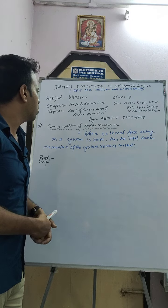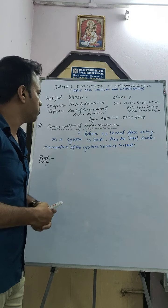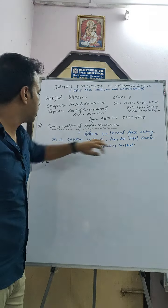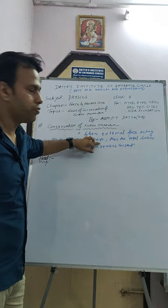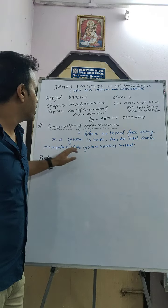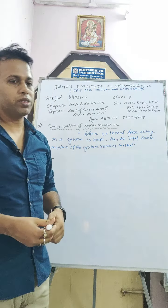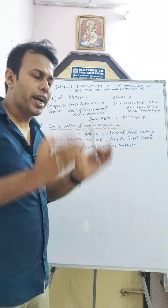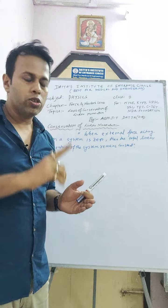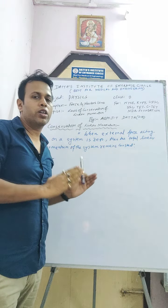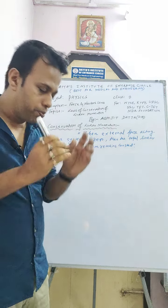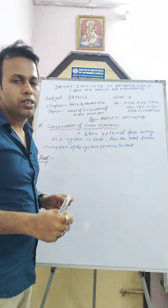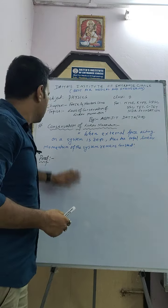The topic is the Law of Conservation of Linear Momentum. The statement is: when the external force acting on a system is zero, then the total linear momentum of the system remains constant. This means if in any system the external force is zero, the linear momentum will always be constant — that is, the initial momentum and final momentum will be equal.